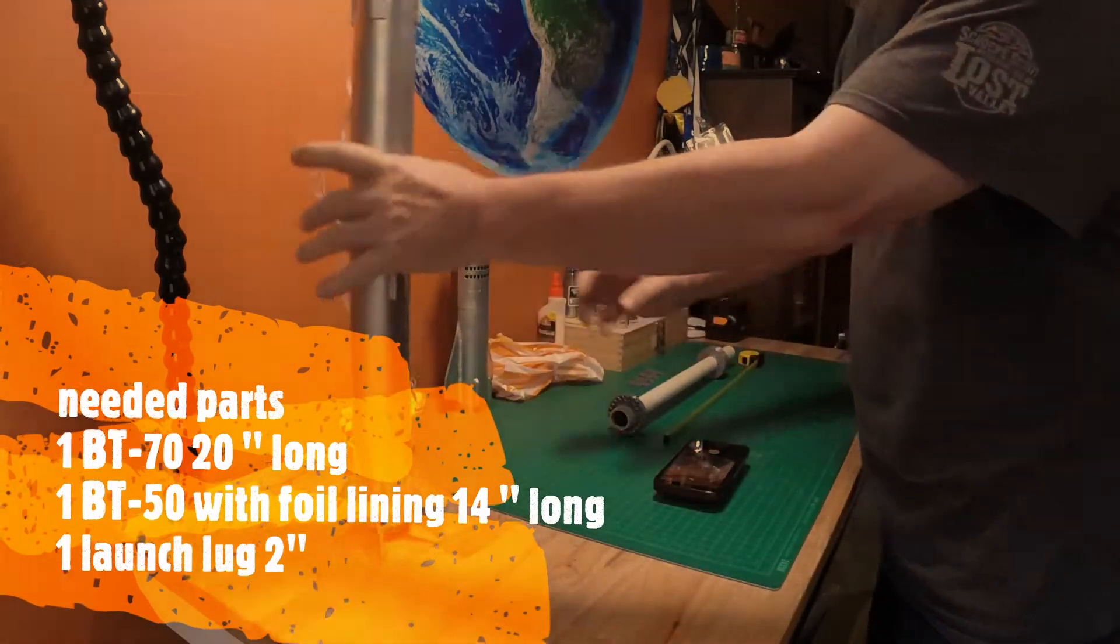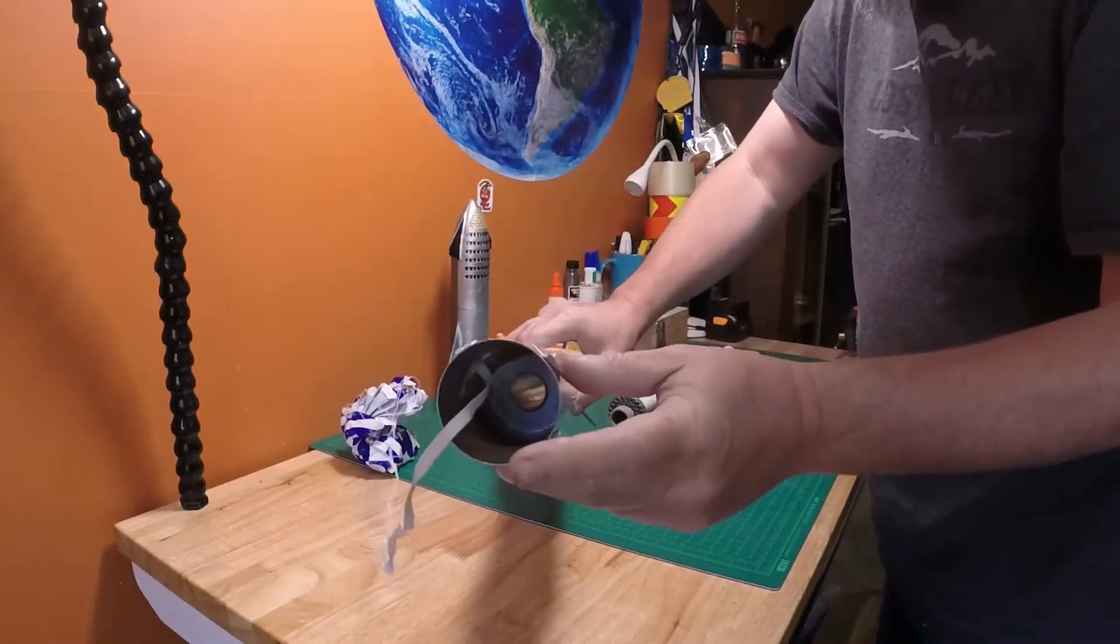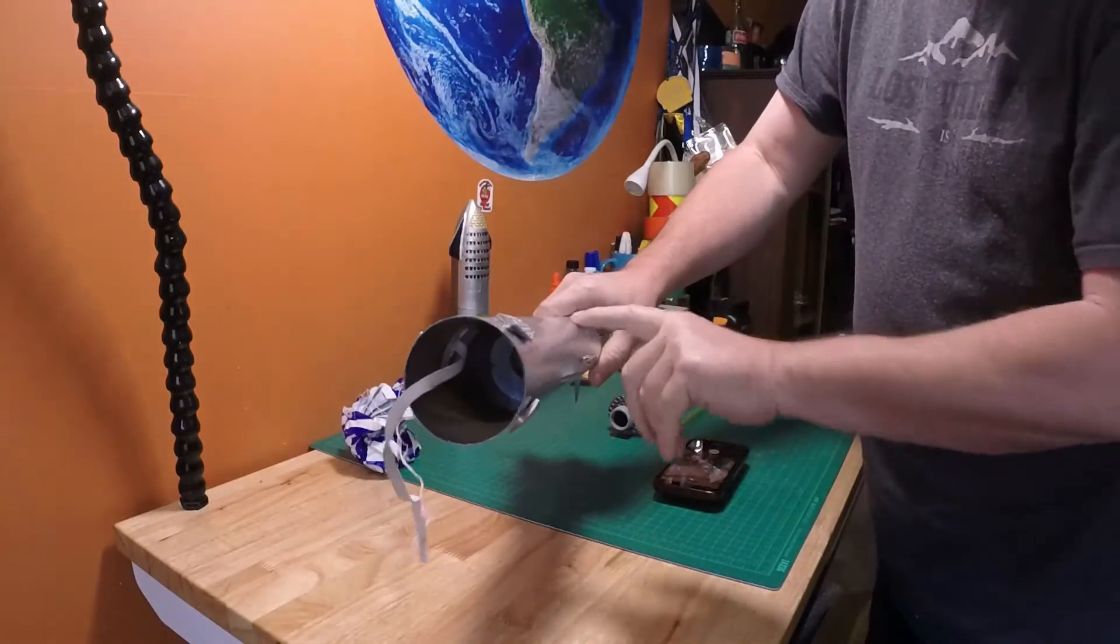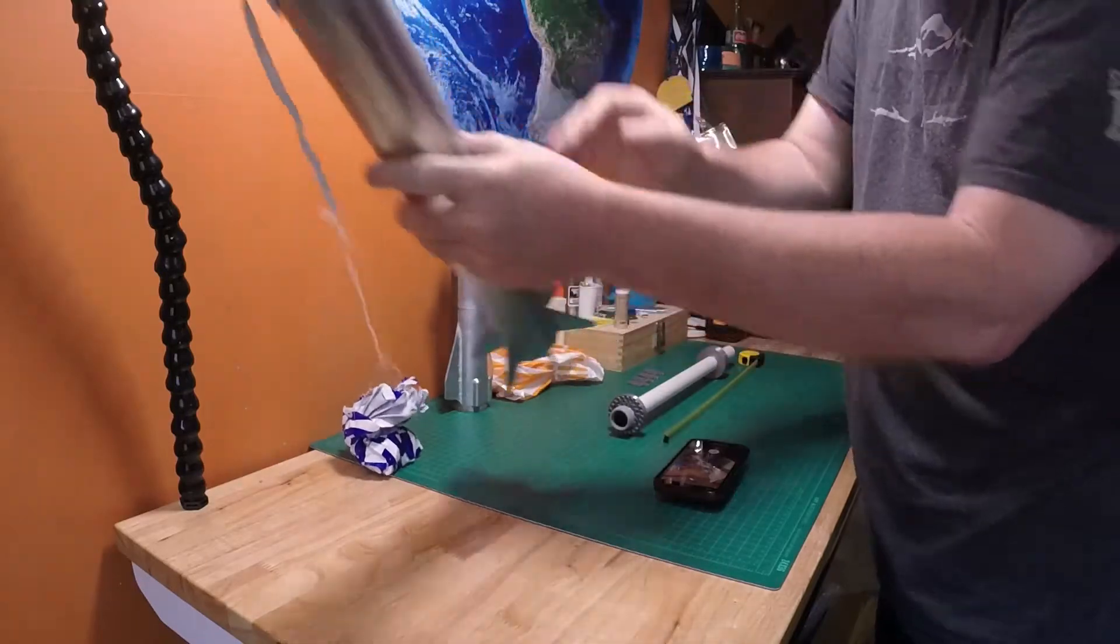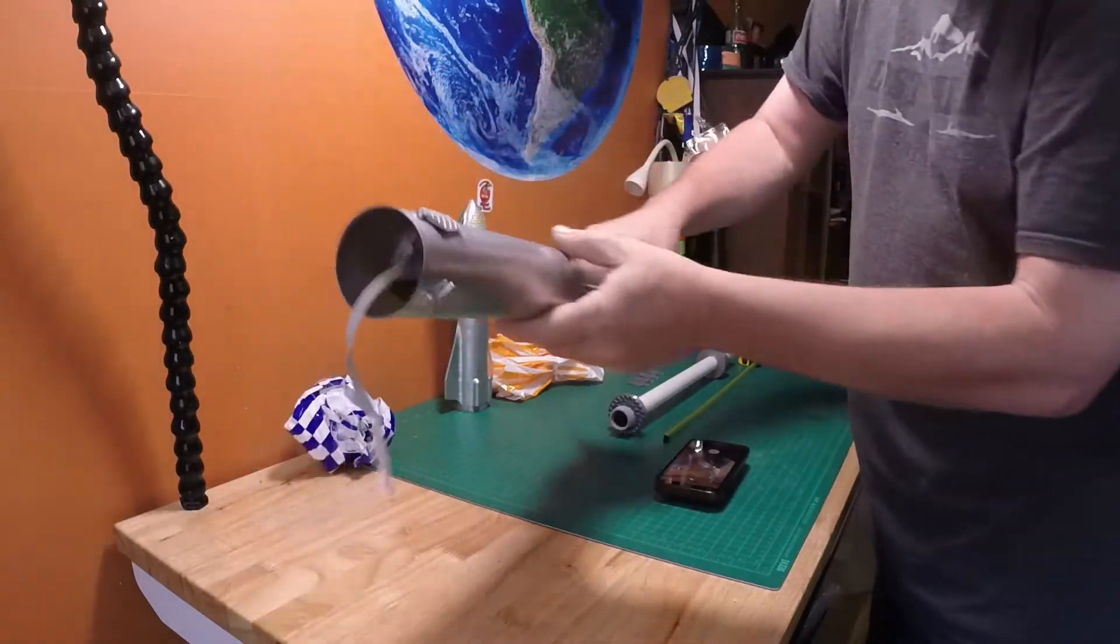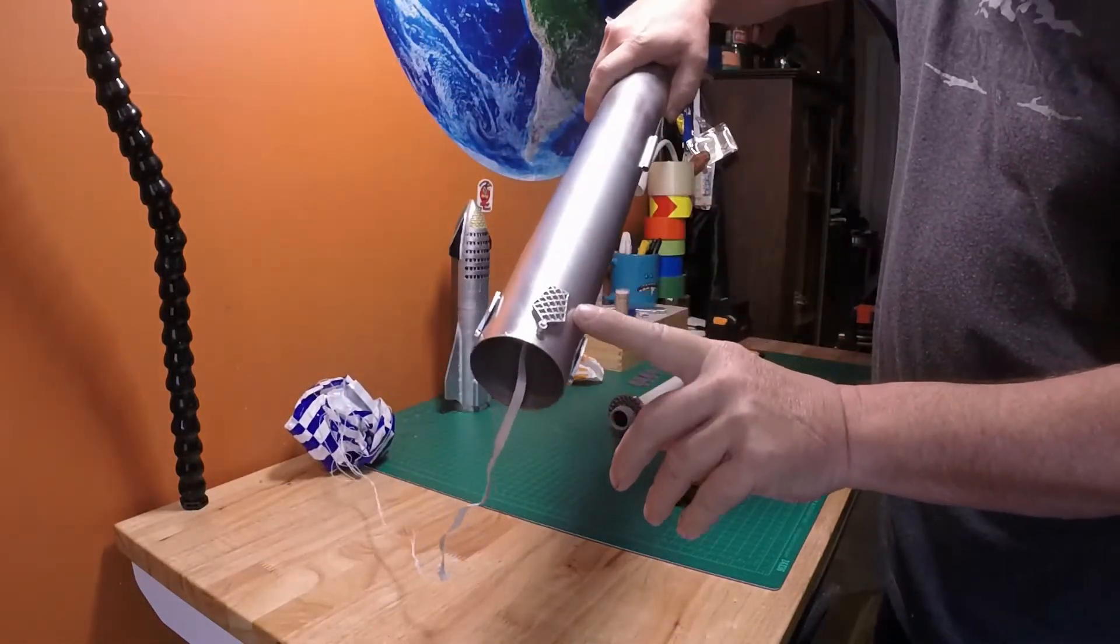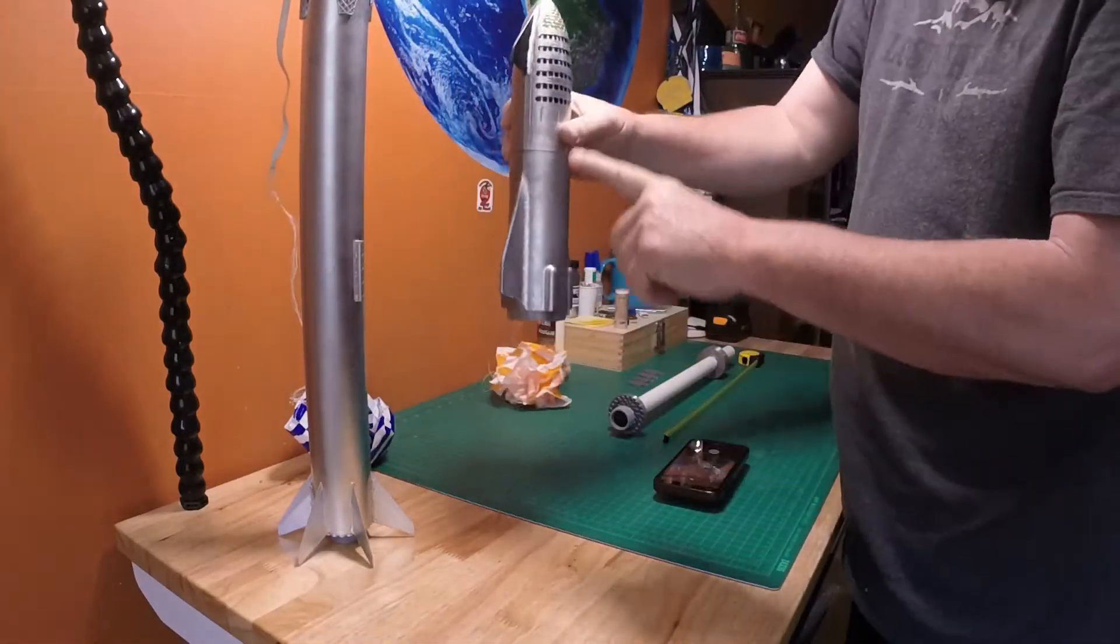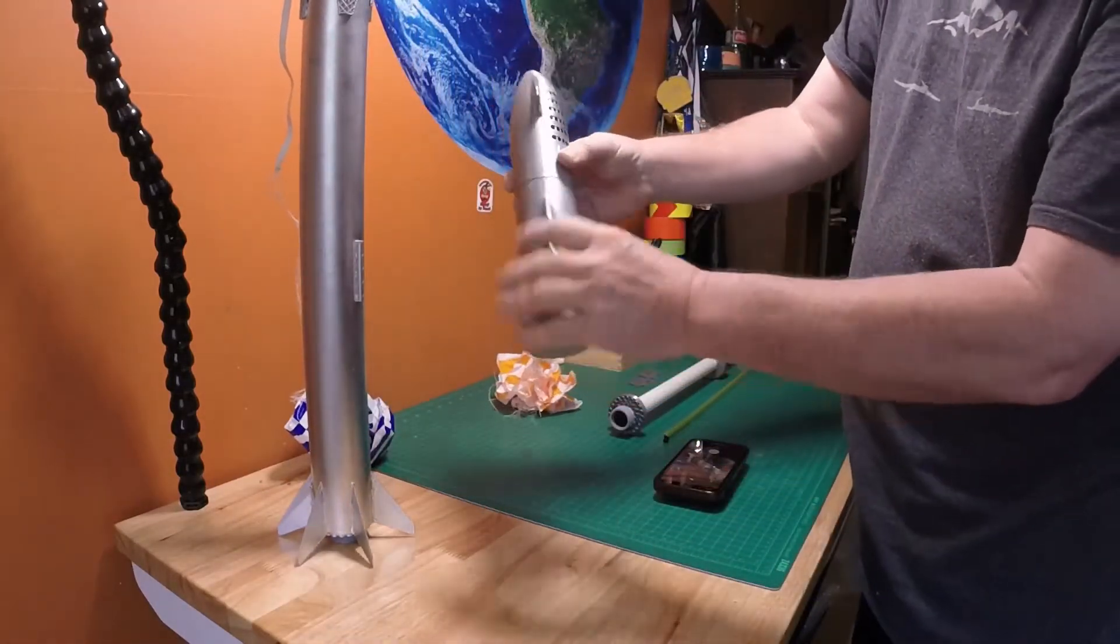You do need to buy the stuffer tube that goes between the engine bulkhead and the top bulkhead. The grid fins are part of the kit, and then you get a nose Starship print.